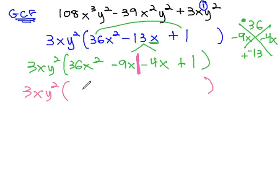On the left side, we can factor out a 9x, leaving behind 4x minus 1. On the right side, we can factor out a negative 1, leaving behind 4x minus 1.